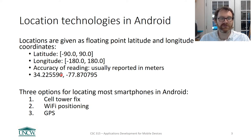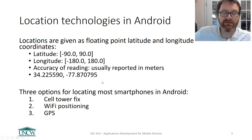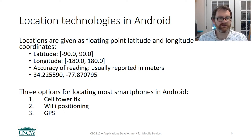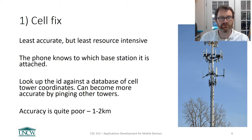How accurate the reading is depends on which technology was used to locate the device. There are three options: the cell tower fix, Wi-Fi positioning, and GPS. Let's talk briefly about how each of these works.